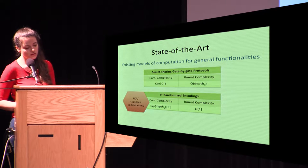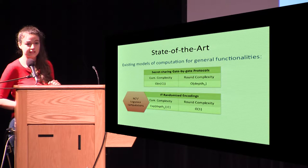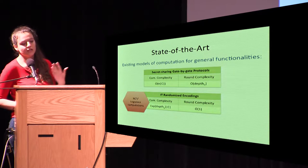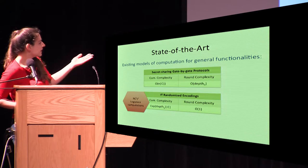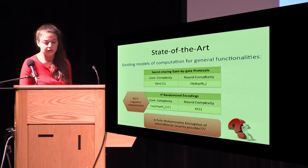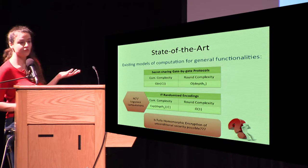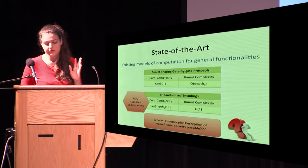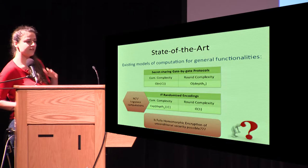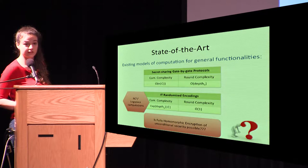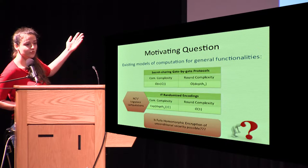Information-theoretic protocols are great, especially those based on secret sharing, because they're computationally more efficient than tools used in the computational setting — more efficient than fully homomorphic encryption. But they require a lot of interaction. The big question is: can we have a fully homomorphic encryption analog in the information-theoretic setting? This question is very hard, and if answered affirmatively, several breakthroughs would follow in different areas.